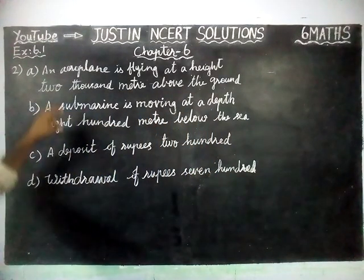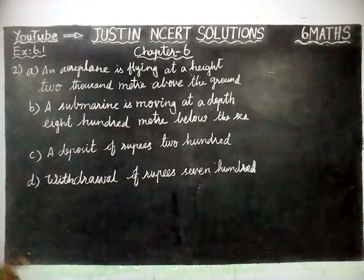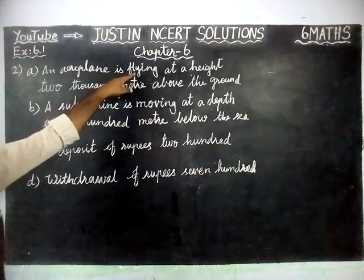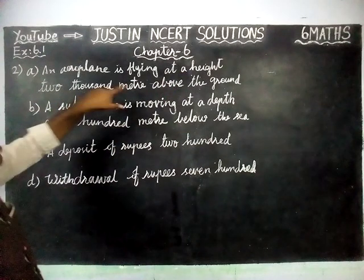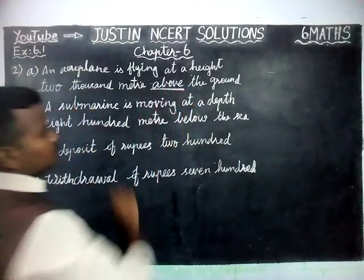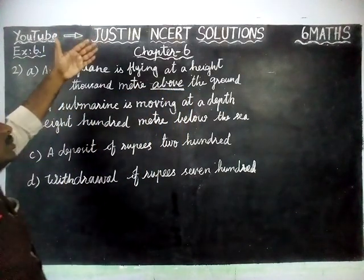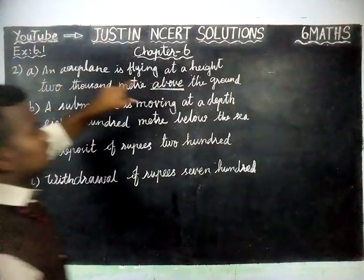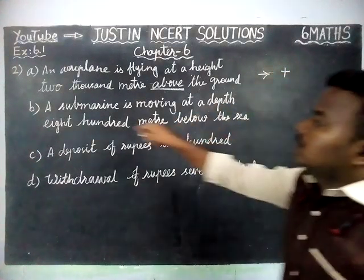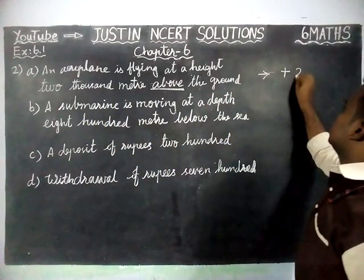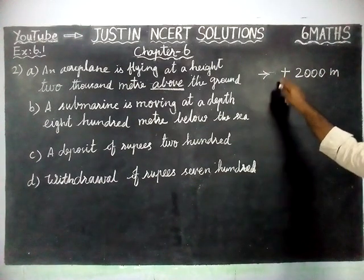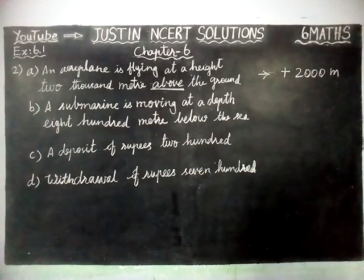Using the given statements, we are going to make integers with the correct sign. The first statement is: an aeroplane is flying at a height of 2000 meters above the ground. We have to underline the word 'above'. From the ground level, above means positive, so this is plus 2000 meters. We can write it as plus 2000.